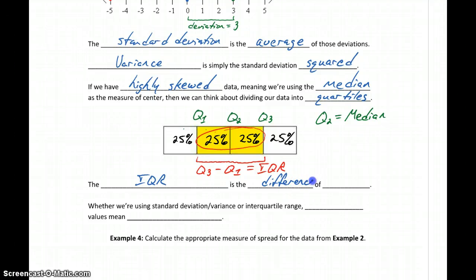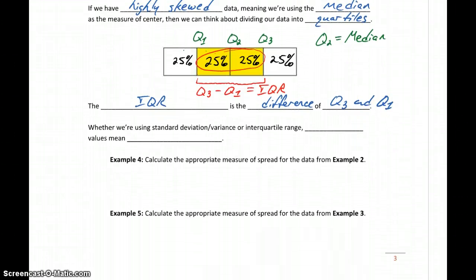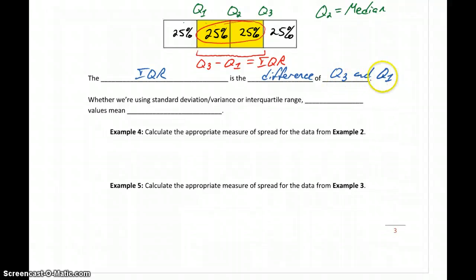And again, if we need to calculate it, it's just the difference between Q3 and Q1. It's something that, again, StatCrunch will calculate for us. StatCrunch can find each of those quartile values, it can find the interquartile range, so we have the idea of where that comes from. Now keep in mind, whether we're using standard deviation or the interquartile range, even though those are measured differently, larger values always mean more spread.